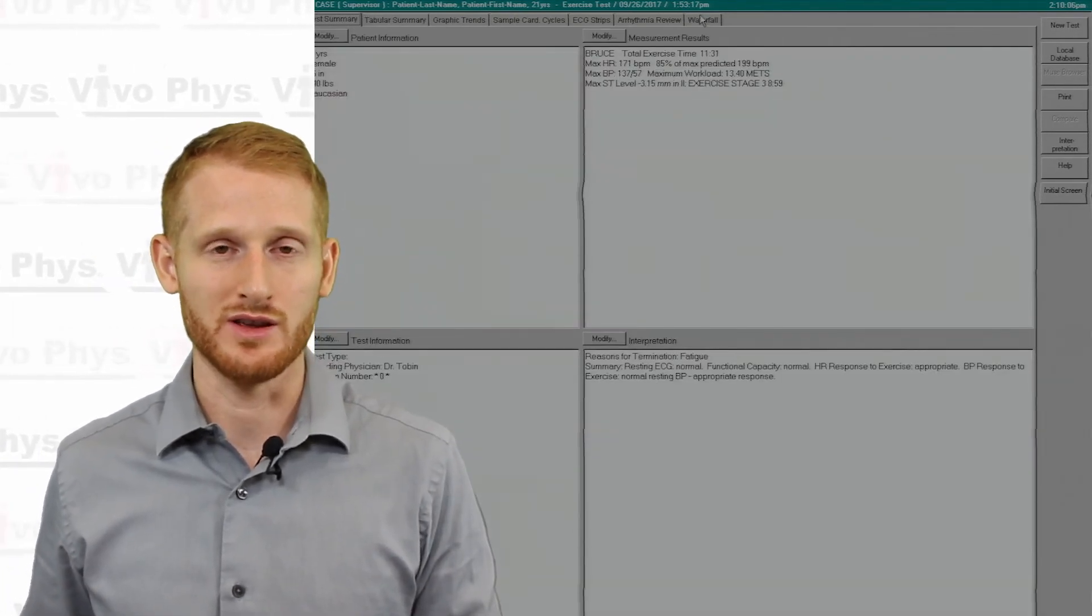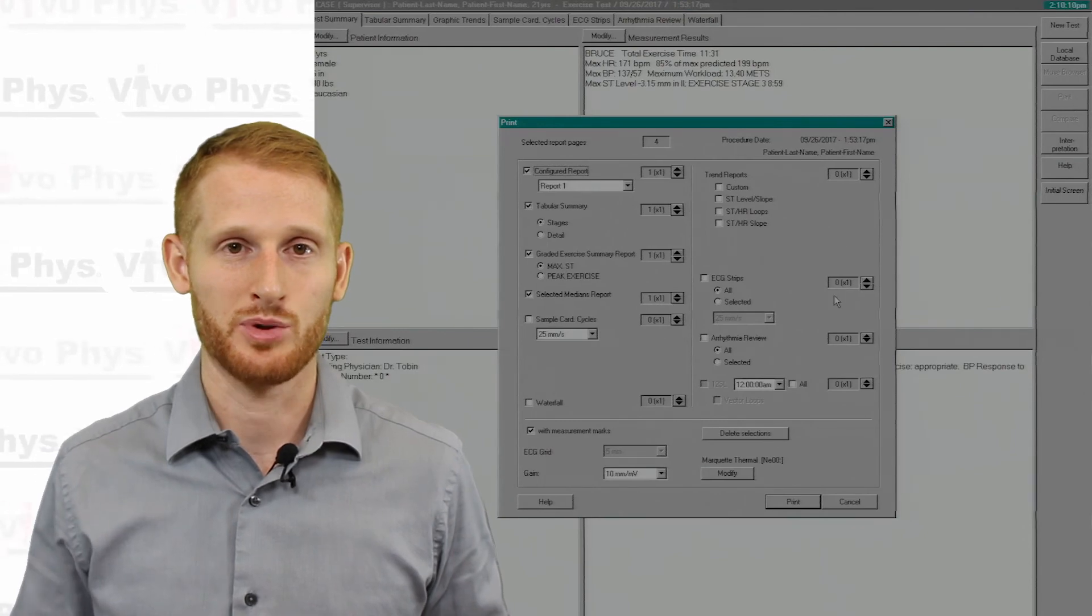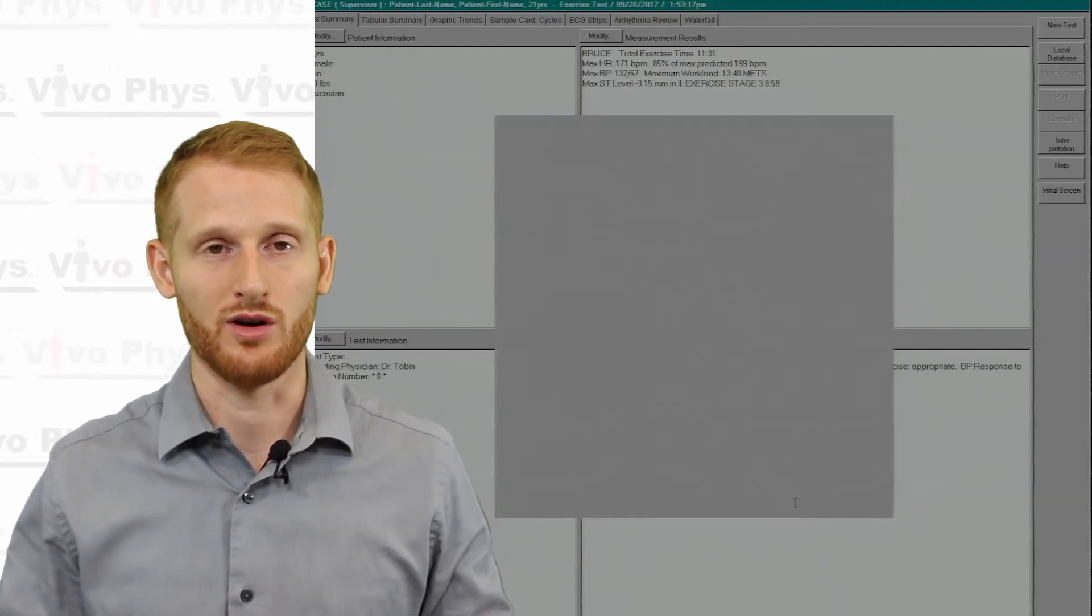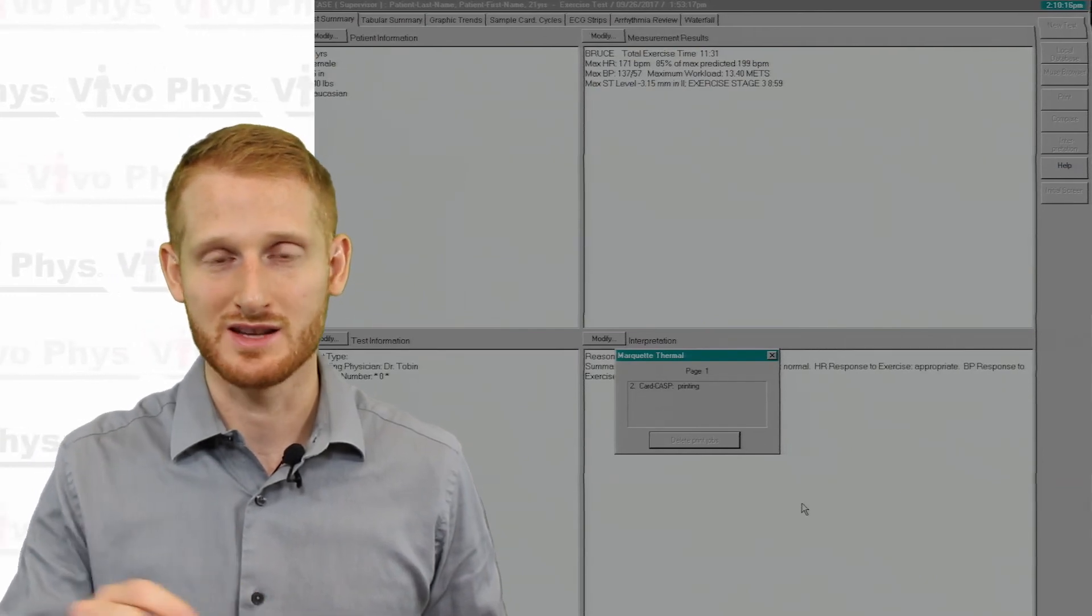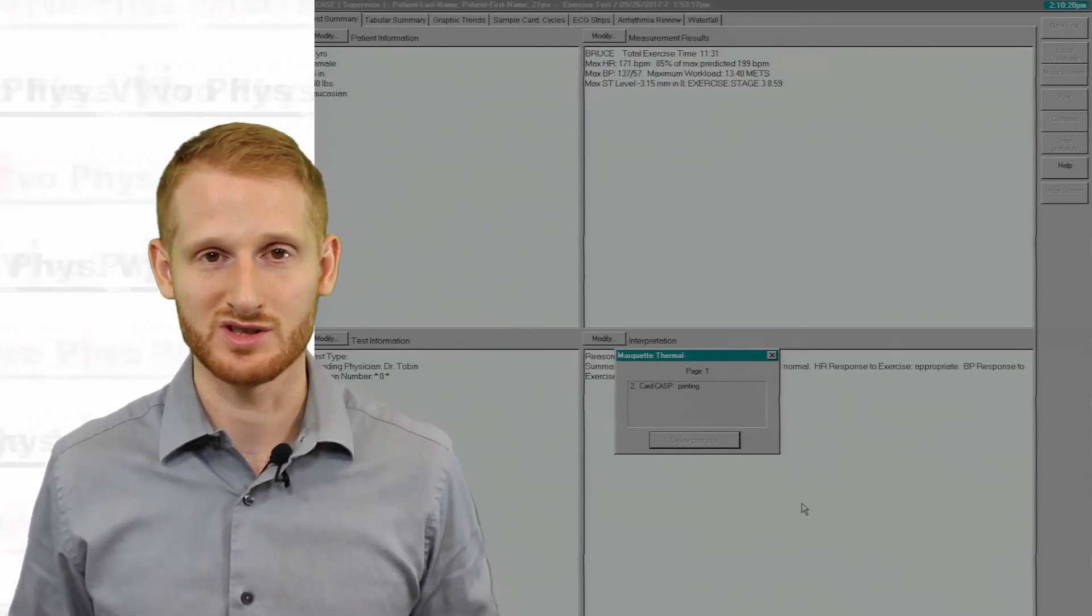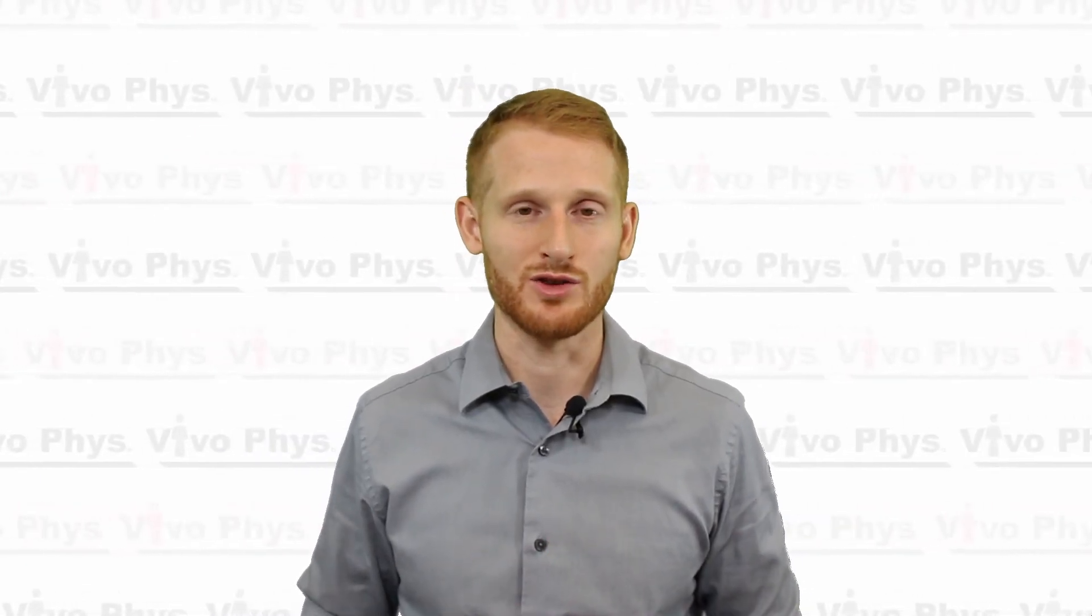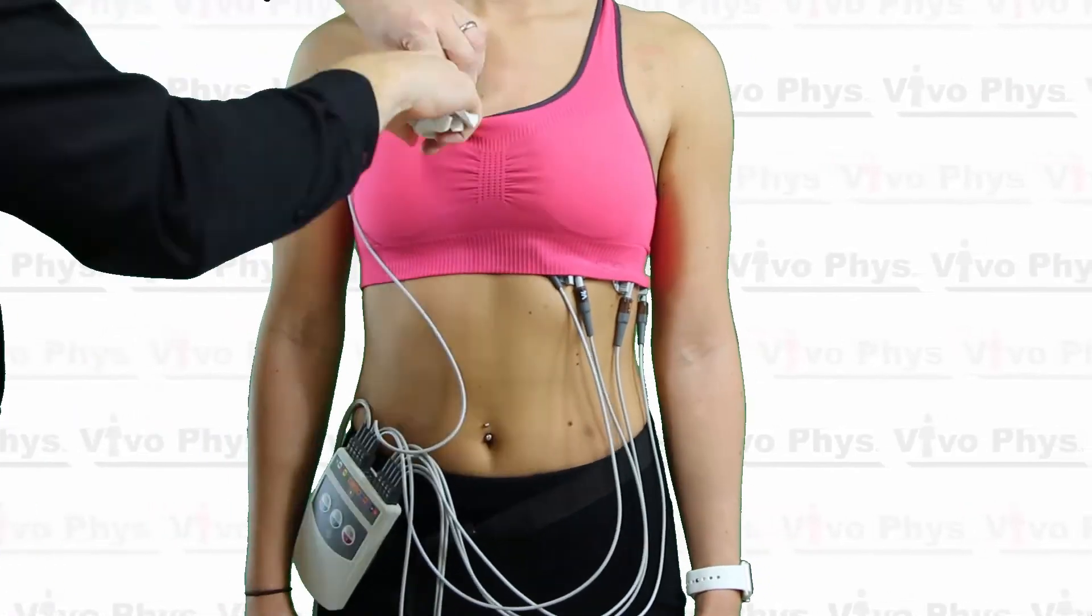Once you've printed off all the arrhythmias you're going to go back to the initial tab and you're going to print the sort of overall indications of the test. You can also print any of the other tabs but those are the two that I recommend at least doing. Once you've printed off everything you need, unhook the person, make sure they're unattached from the machine and just hit the initial screen button and that's going to get you back to the screen you saw when you first turned on the system.